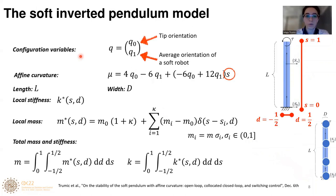Let us now delve deeper into the soft inverted pendulum model. We have here two configuration variables: q0, tip orientation, and q1, average orientation. This soft pendulum has an affine curvature, which means that it is an affine function of a local coordinate s. s is a local and normalized coordinate that goes from 0 to 1 and denotes where we are along the pendulum's central axis. Then we have another local coordinate d that determines where we are along the width of the pendulum.